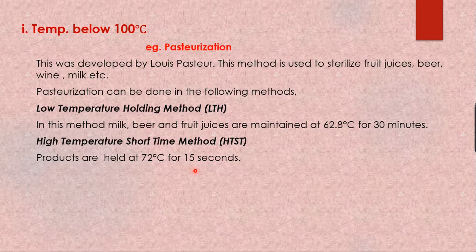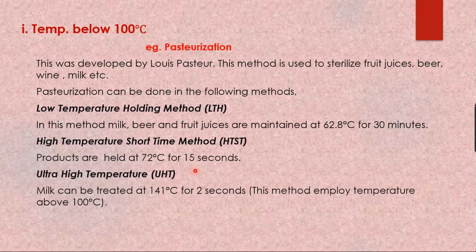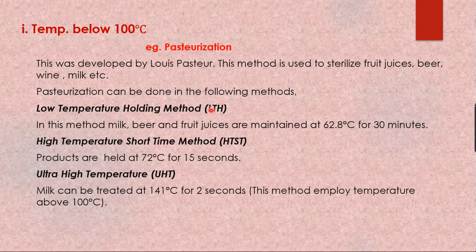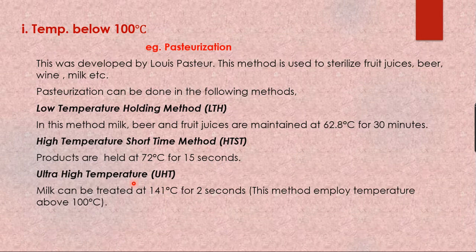Another pasteurization method is Ultra High Temperature, where the temperature is 141°C for just two seconds. Although this method uses temperature above 100°C, the time is very short, and it is also called the flash method. These are all the different methods used in the pasteurization of various products.